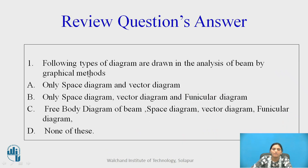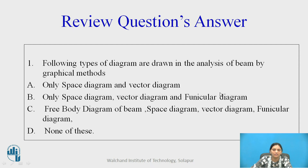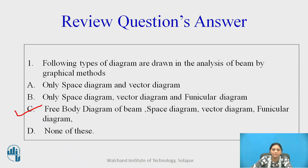Now answer this question: Which types of diagrams are drawn in the analysis of a beam by the graphical method? Option A: only space diagram and vector diagram. Option B: only space diagram, vector diagram and funicular diagram. Option C: free body diagram of the beam, space diagram, vector diagram and funicular diagram. Option D: none of these. Option C is correct — all four types of diagrams are drawn: the free body diagram of the beam, space diagram, vector diagram, and funicular diagram.